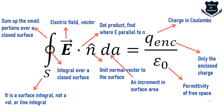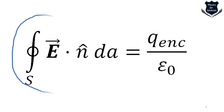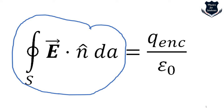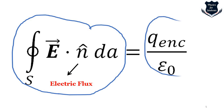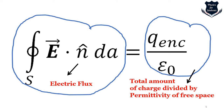Q-enc is only the enclosed charge, and Q denotes the charge in coulombs. The entire left portion marked in blue denotes the electric flux, and the right portion denotes the total amount of charge divided by the permittivity of free space. This is the essence of Gauss's law.